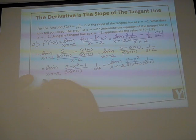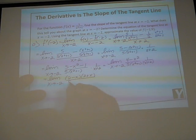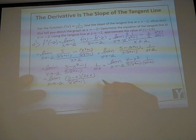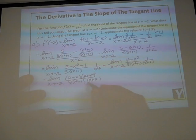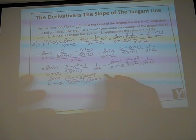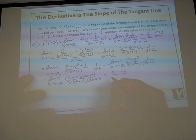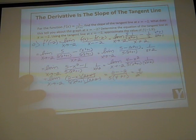Combining the numerator: 5 − (x² + 1) = 4 − x². So we have the limit as x approaches −2 of (4 − x²) / [5(x² + 1)(x + 2)]. Now 4 − x² is a difference of squares, which factors as (2 − x)(2 + x). The (2 + x) and (x + 2) are the same common factor and cancel. We can now plug in x = −2: numerator is 2 − (−2) = 4; denominator is 5[(−2)² + 1] = 5(5) = 25. That gives 4/25.